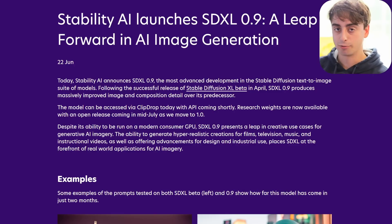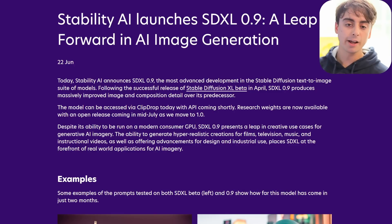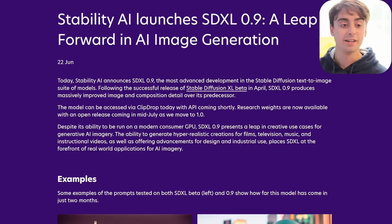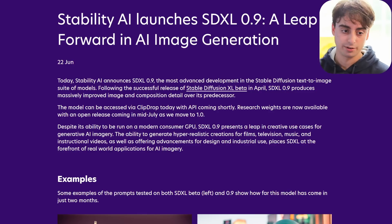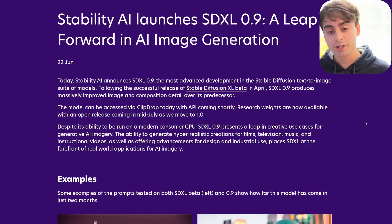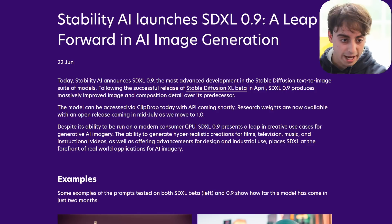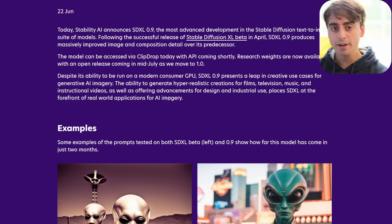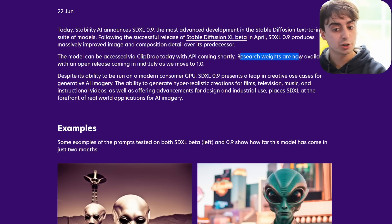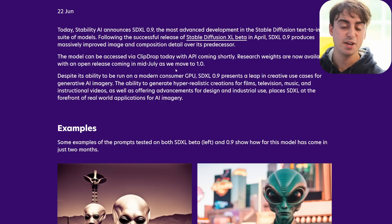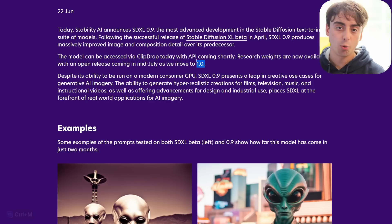This might look boring, but it's actually really exciting. Stability AI launched SDXL 0.9, and this is a serious leap forward in AI image generation for a number of reasons. You might be thinking — SDXL was already released, wasn't it? Well, it was just in beta in April. This follows that up and produces massively improved image and composition detail over its predecessor. It's already available to use in a number of places, and the research weights are now available. An open release is coming mid-July, and that will move into SDXL 1.0.